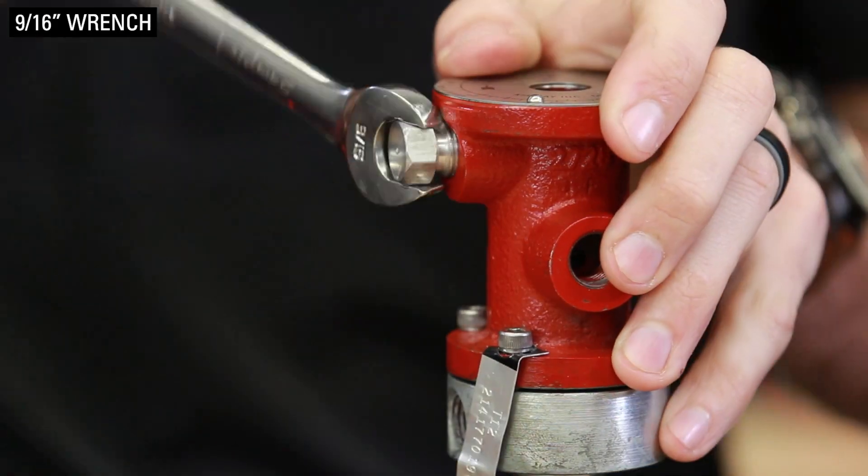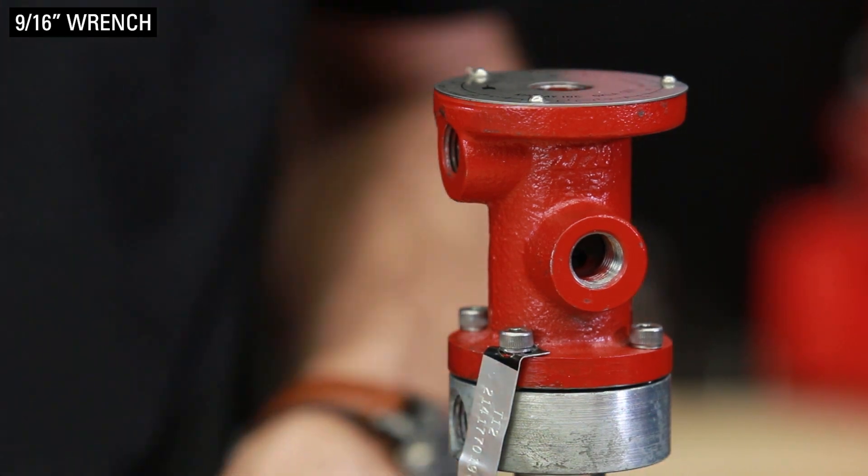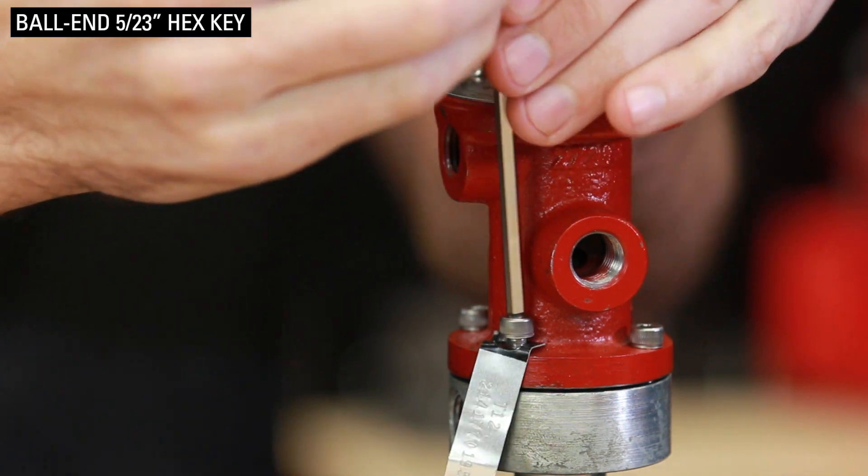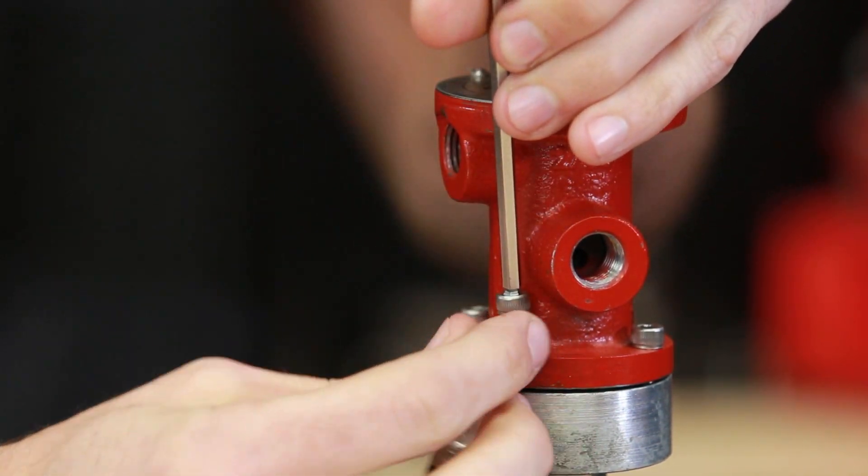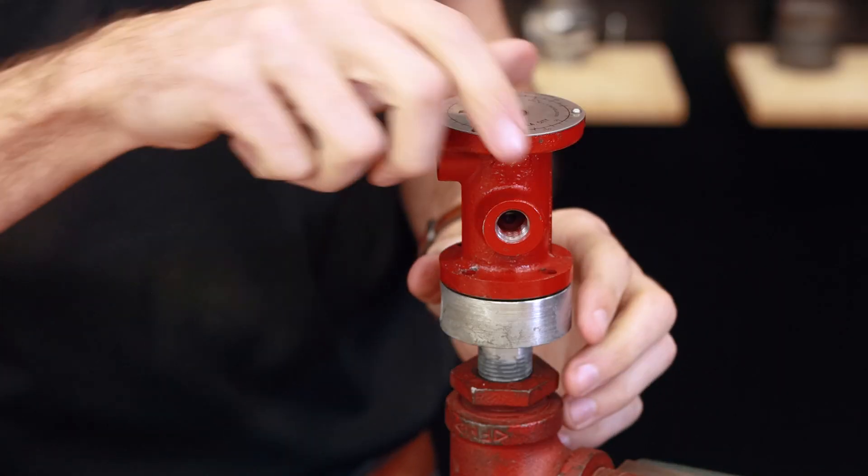Use a 9/16th wrench to remove the breather plug. Use a ball end 5/32nds hex key to loosen the four bonnet screws. Remove the bonnet.